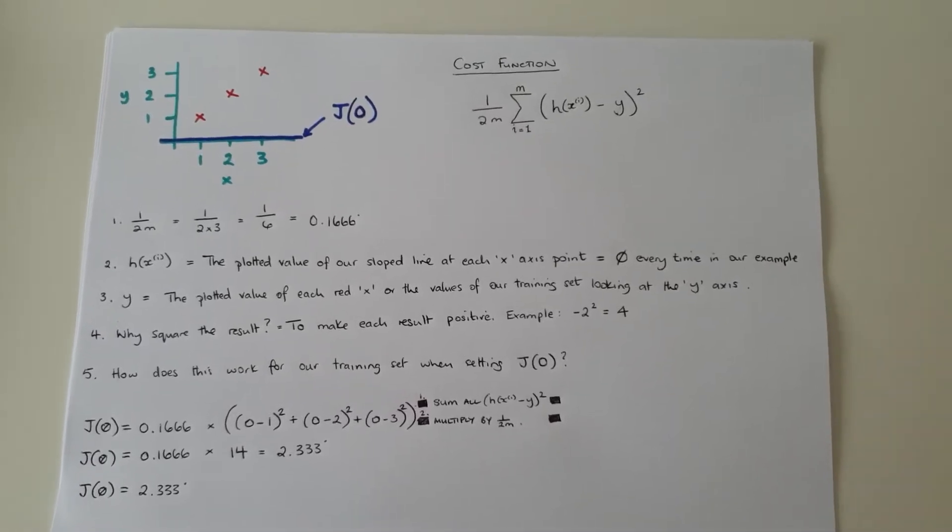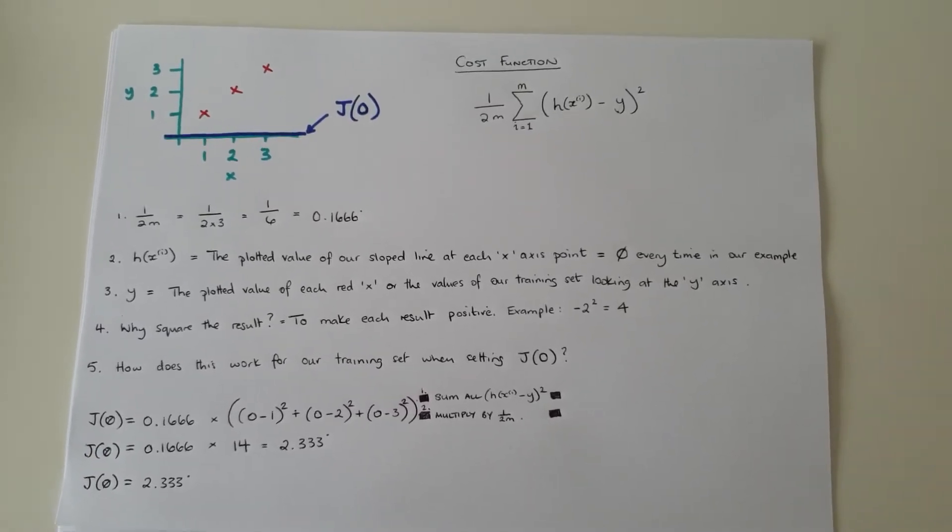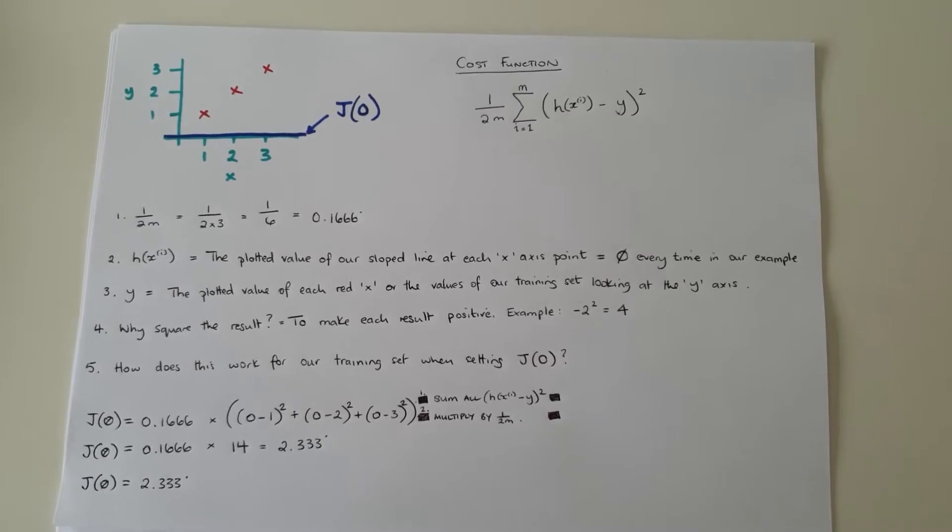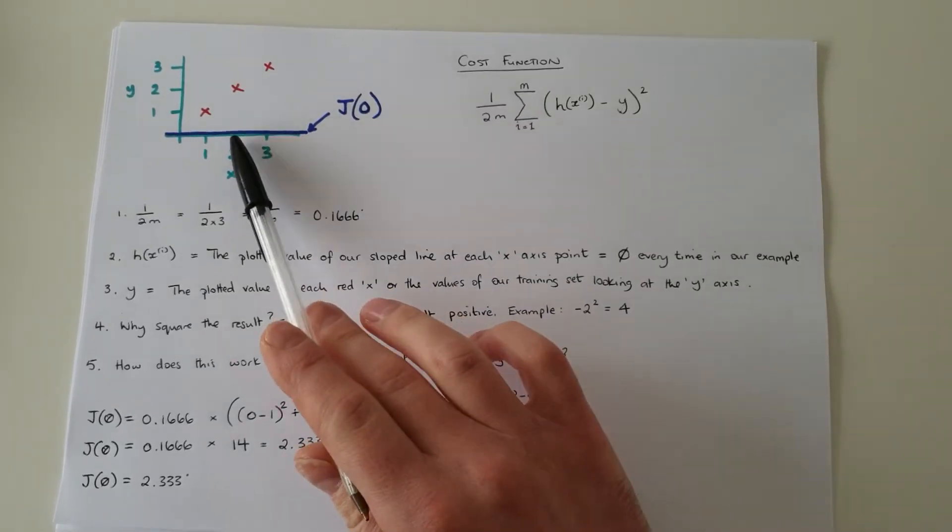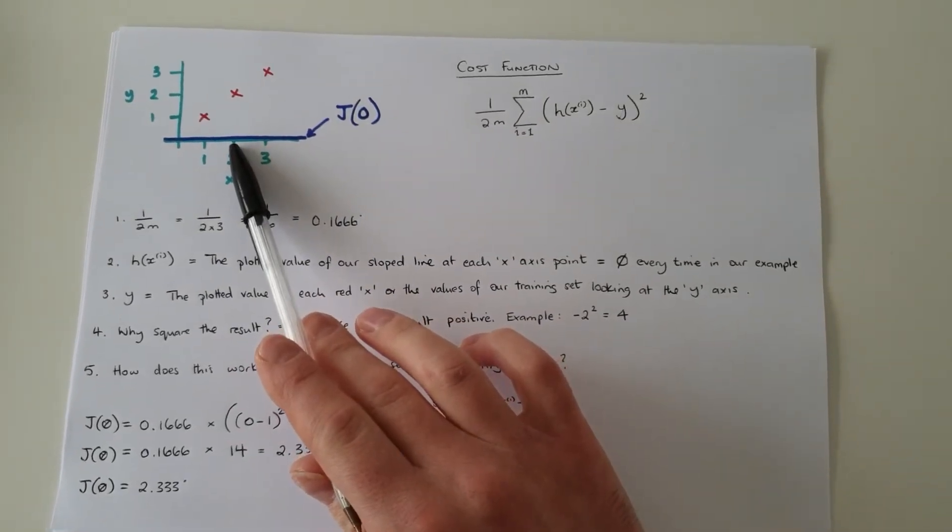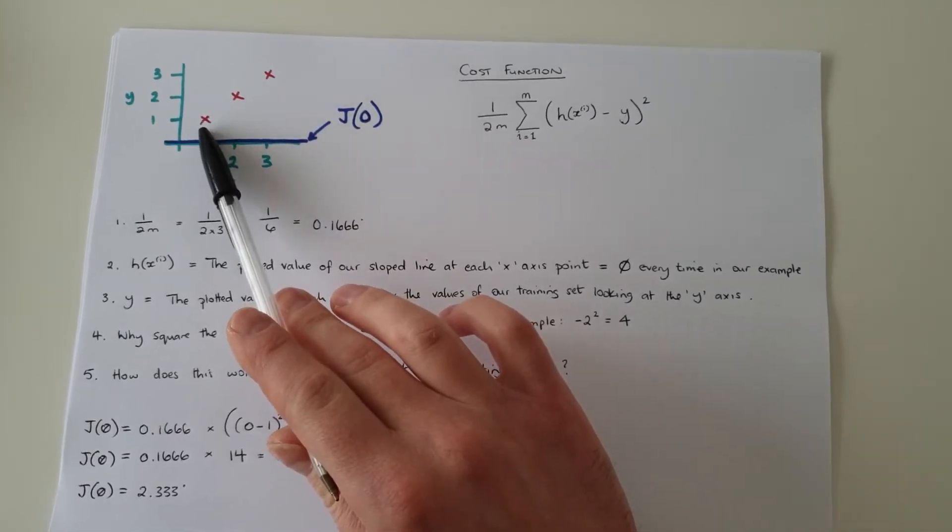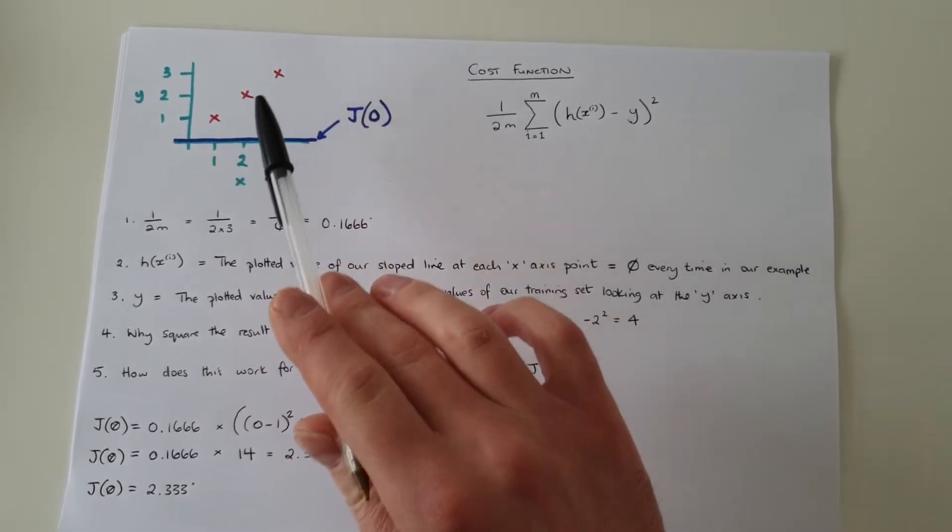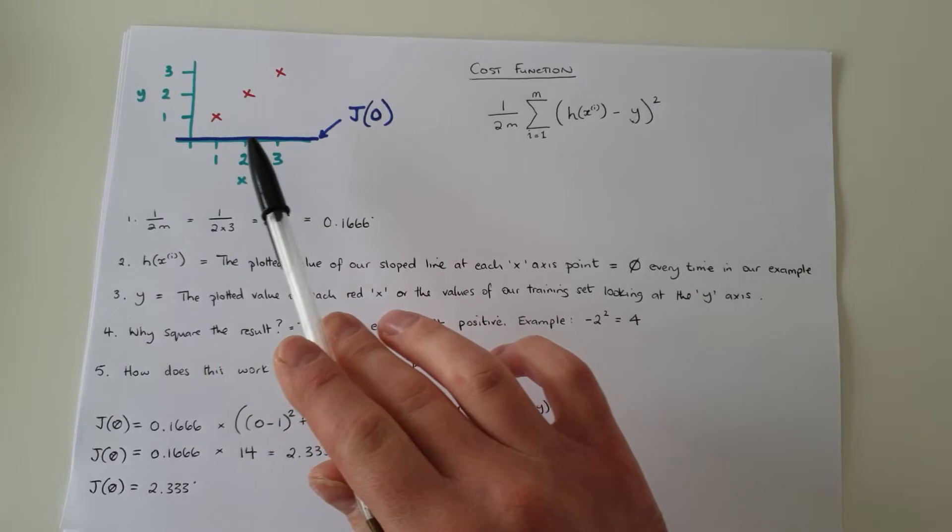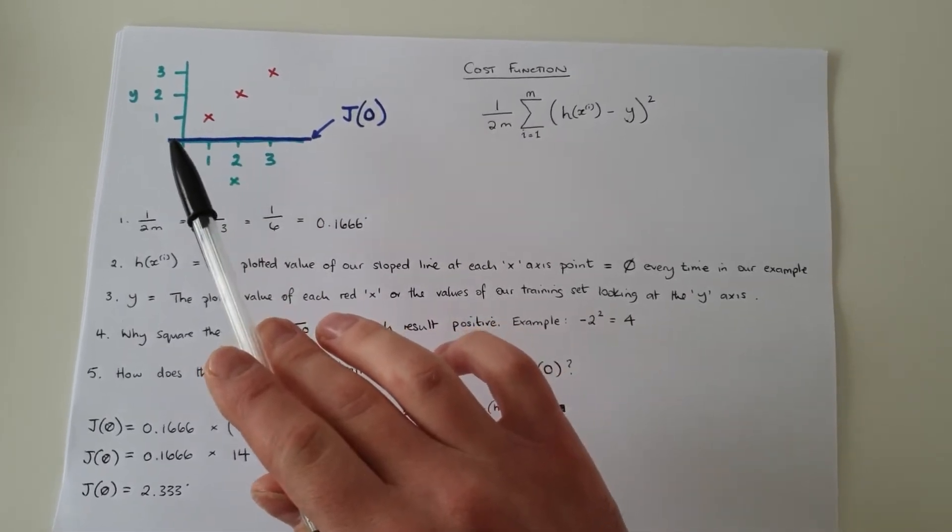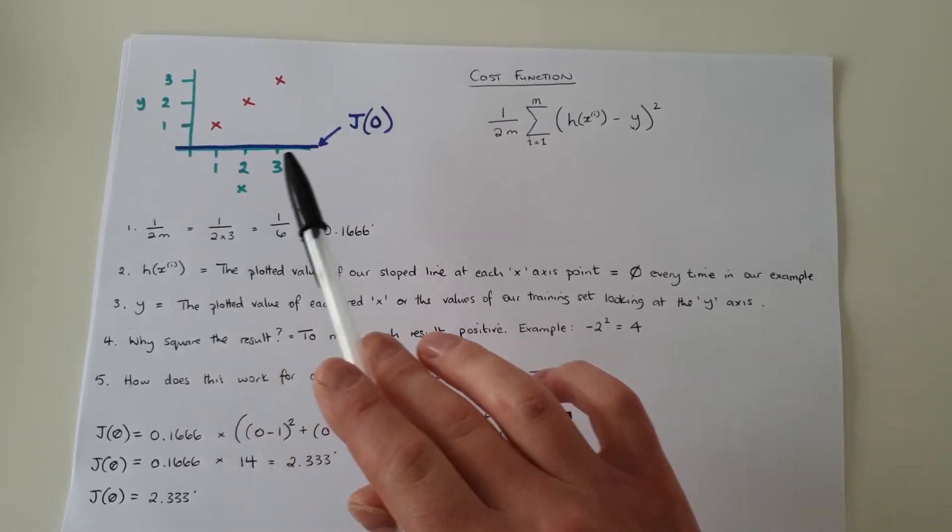Just a quick run through of how to calculate the cost function when j equals zero. We've got our results there. We've got our training set with three values and we've set j to zero. We know that there's a zero slope on the line.